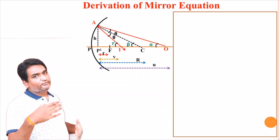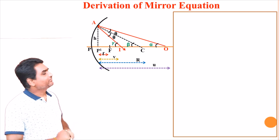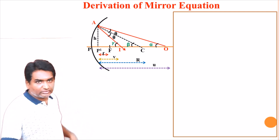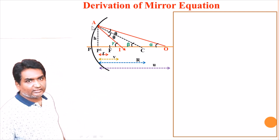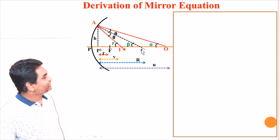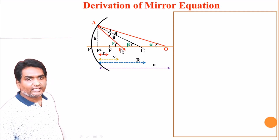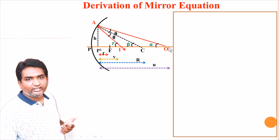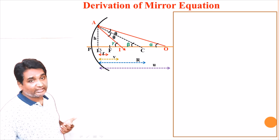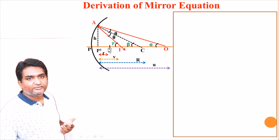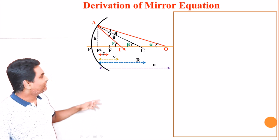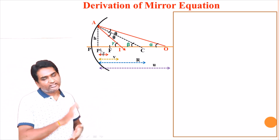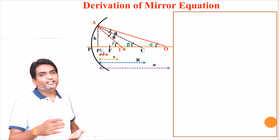If you observe this particular diagram, we will have a number of triangles. Those triangles are: A-O-C is one triangle, A-C-I is another triangle. Three right angle triangles also — A-O-P-dash is one right angle triangle, A-C-P-dash is another, and A-I-P-dash is the last right angle triangle. We are going to use all these five triangles for our derivation purpose.